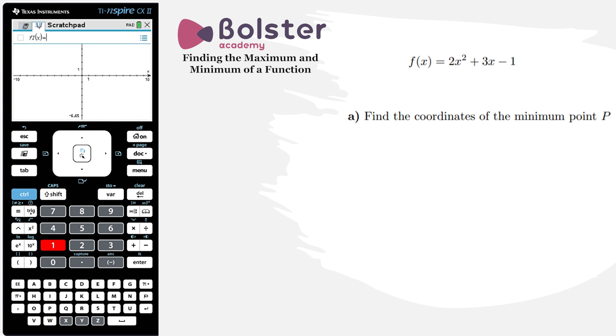The function that we want to look at is 2x squared plus 3x minus 1. Hit enter and up pops the graph of the function.